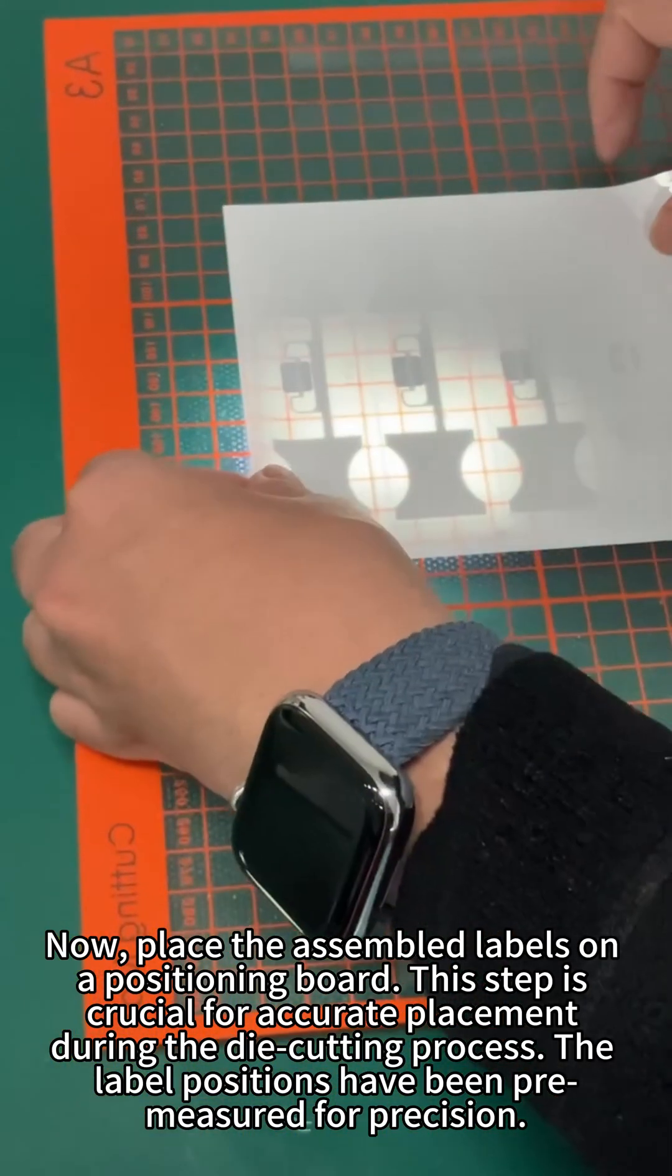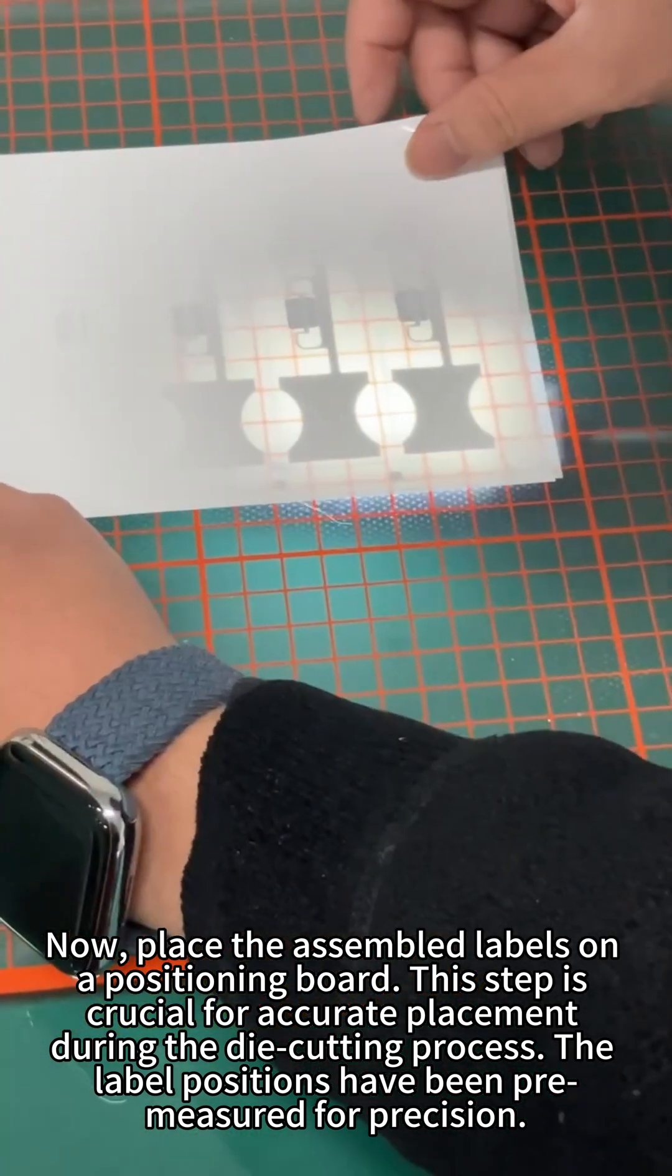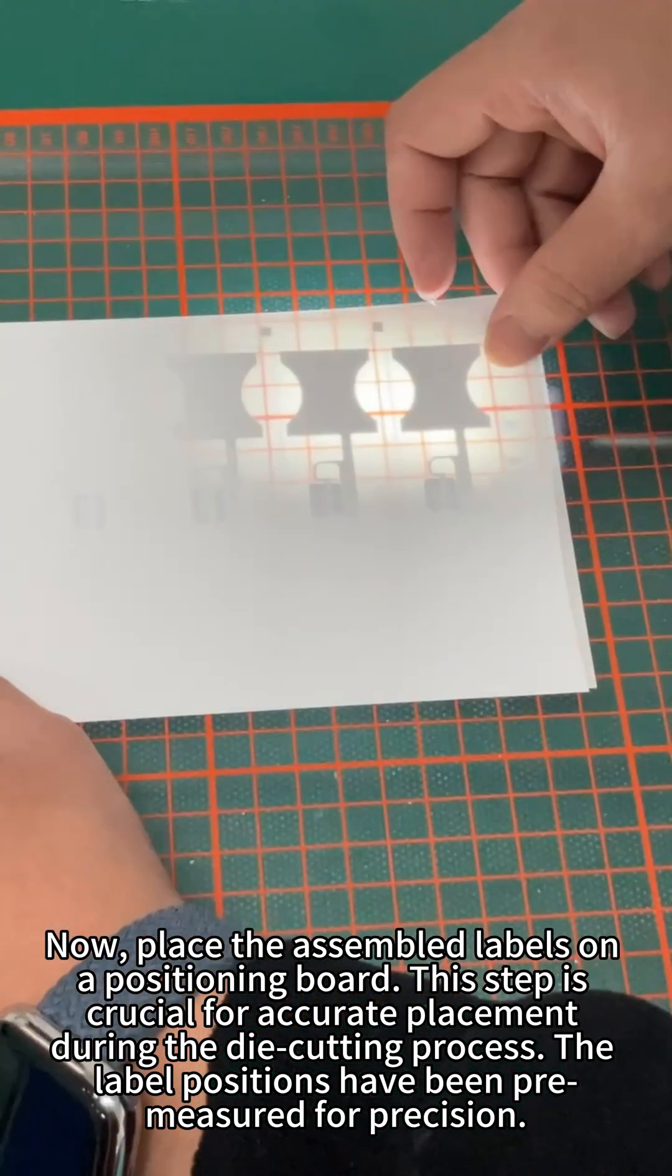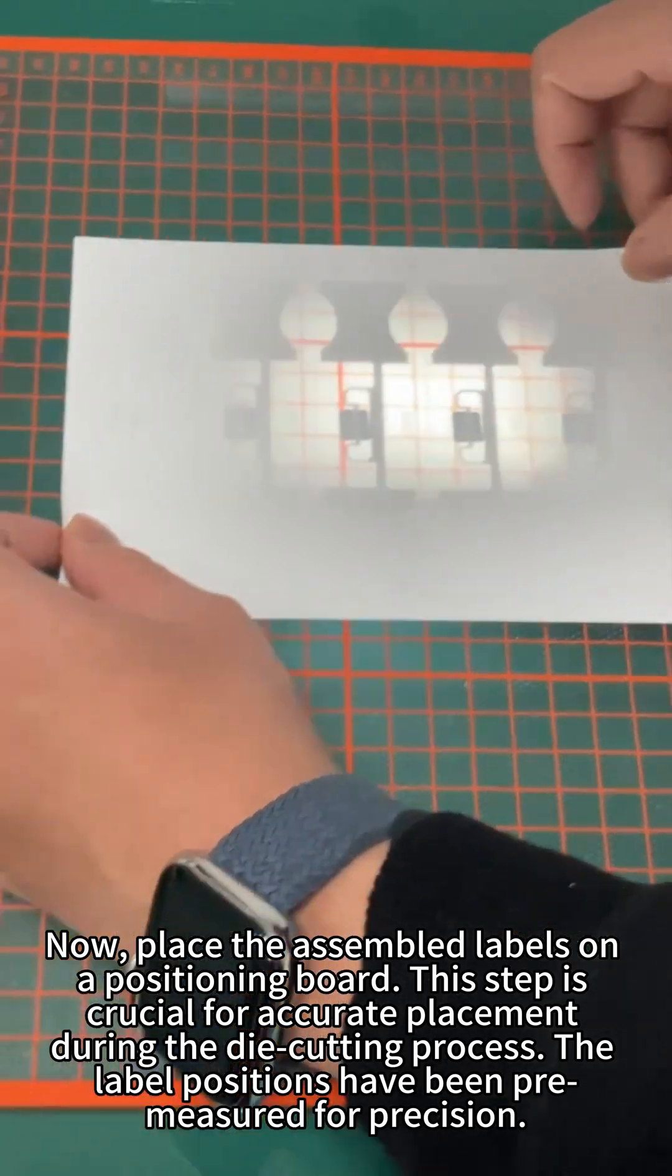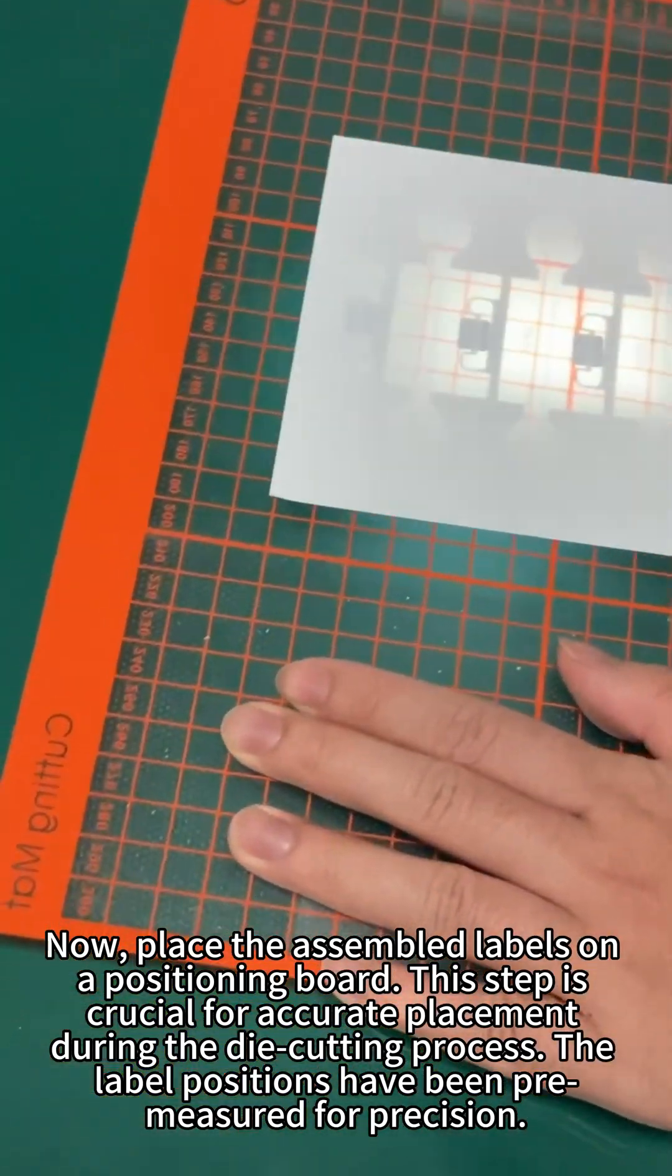Now, place the assembled labels on a positioning board. This step is crucial for accurate placement during the die cutting process. The label positions have been pre-measured for precision.